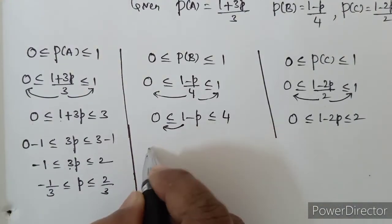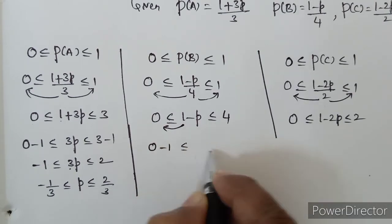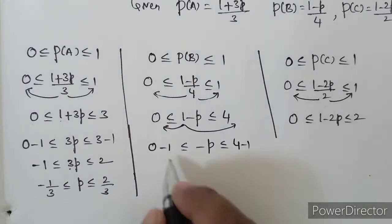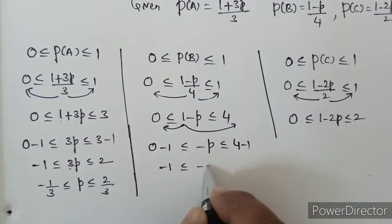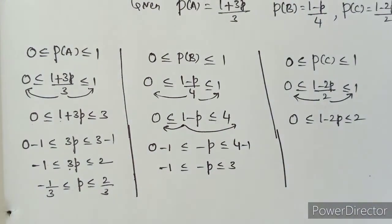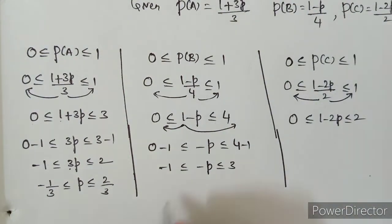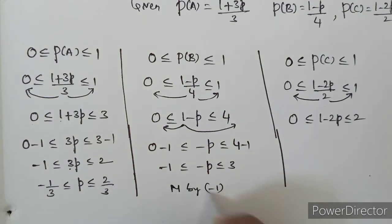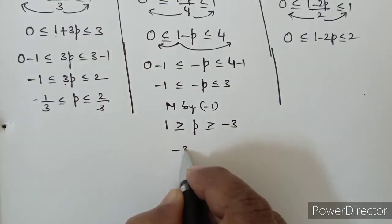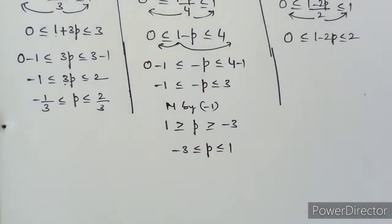For P(B): subtracting 1 gives -1 ≤ -p ≤ 3. Multiplying throughout by -1 (reversing inequalities): 1 ≥ p ≥ -3. Writing in standard order: -3 ≤ p ≤ 1. This is equation 2.